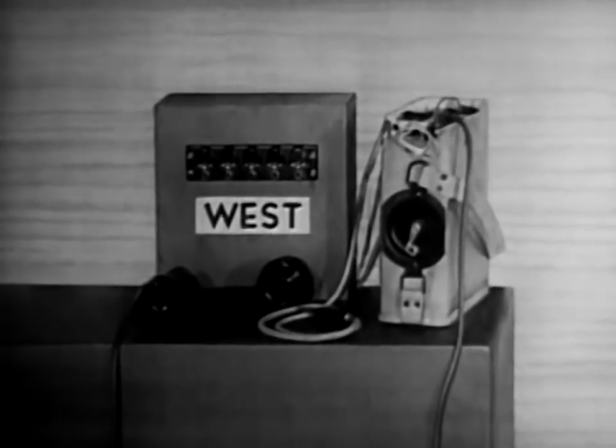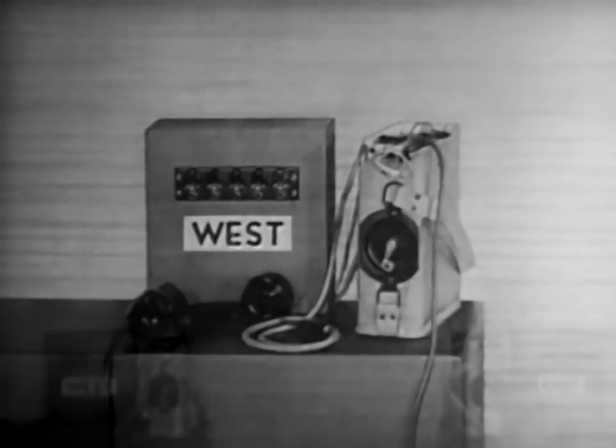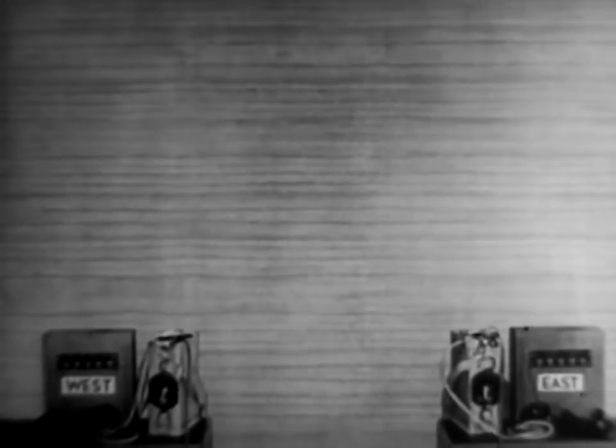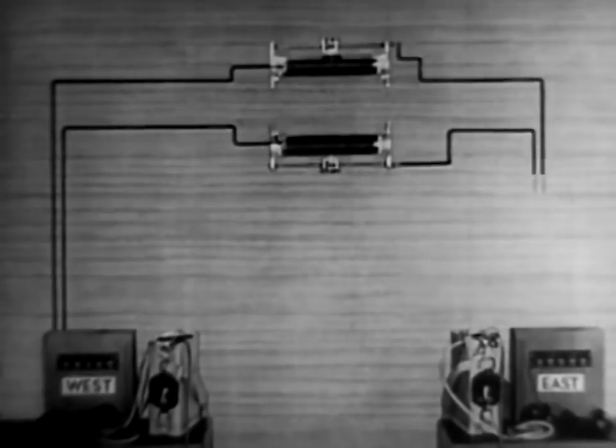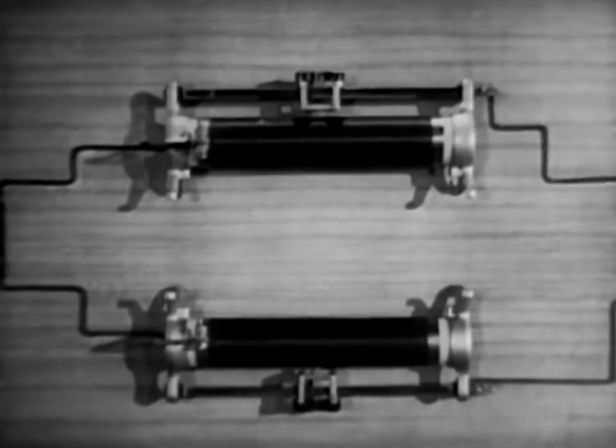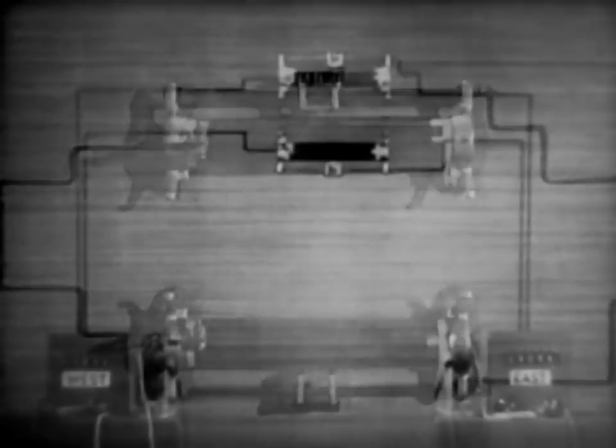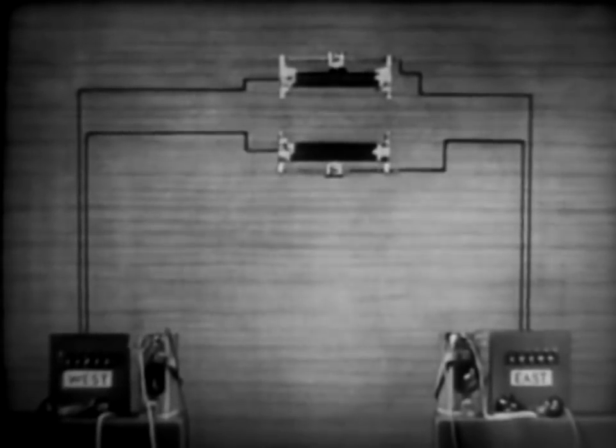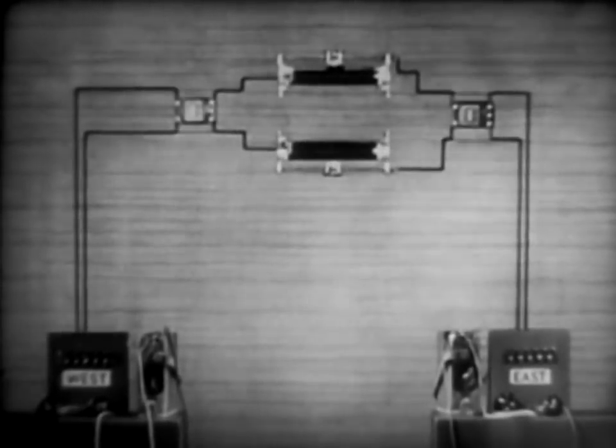Here is a simplified model of a local battery switchboard. Let's suppose we have a line to a second board several miles away. These resistors represent the normal line resistance. We want a telegraph channel between these two points.